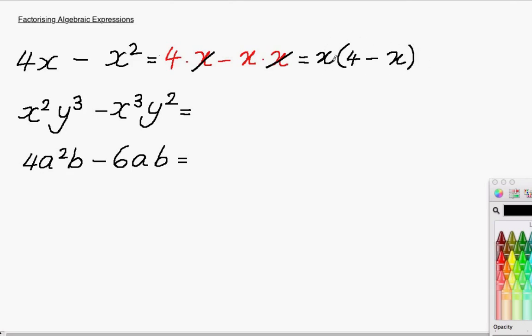This is the factorised form of this expression. If you want to check your answer, just multiply out again and see what happens. x times 4 is 4x minus x times x is x squared. So we're fine. We know that must be correct.